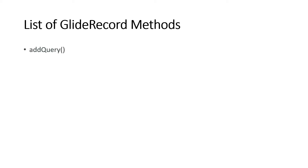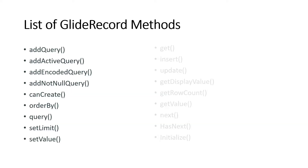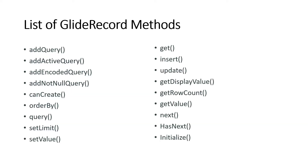There are many methods available in GlideRecord. I'll give you a link for the developer site where you can check all methods available. I'll try to give you examples of each important method you'll use very often in ServiceNow development. The methods include: addQuery, addActiveQuery, addEncodedQuery, addNotNullQuery, orderBy, setLimit, setValue, get, insert, update, getDisplayValue, getRowCount, getValue, next, hasNext, and initialize. I'll show you each method with practical examples so you can practice on your own ServiceNow developer instance.